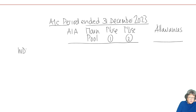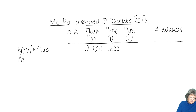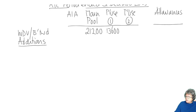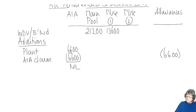Let's do the written down values brought forward from the question. The main pool is £21,200, and the car was £13,600. For additions, we bought some plant and machinery, so that will go in the AIA column and we will claim AIA — don't forget to take it across to the allowances column.